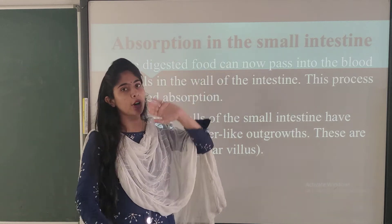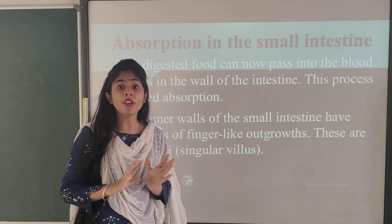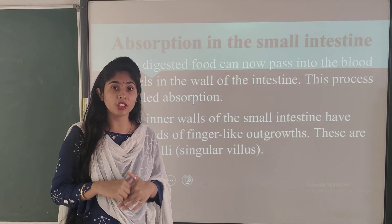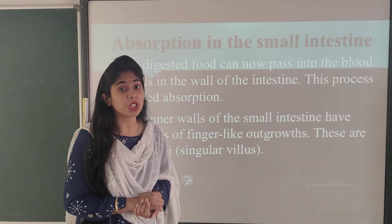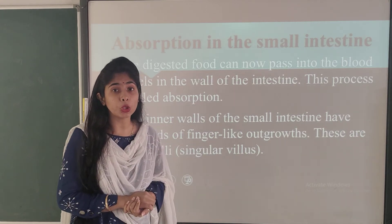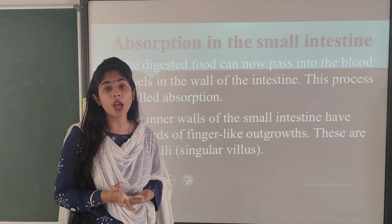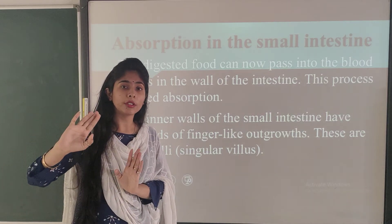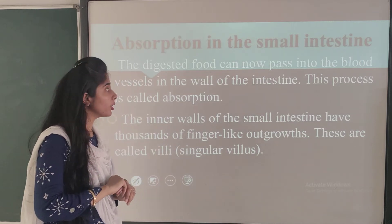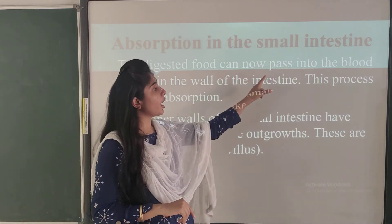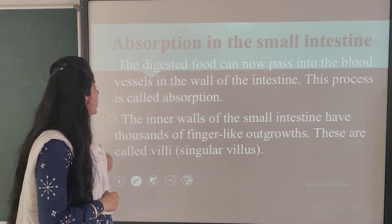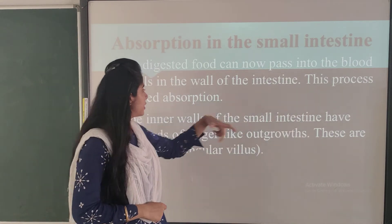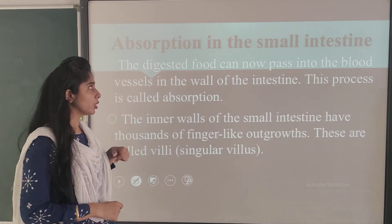Now we discuss absorption in the small intestine. After digestion, absorption must happen so nutrients are not lost with excreta. The digested food can now pass into the blood vessels in the wall of the intestine, and this process is called absorption. When the digested nutrients come into the small intestine, the blood vessels in the wall of the small intestine take these nutrients — this process is known as absorption.